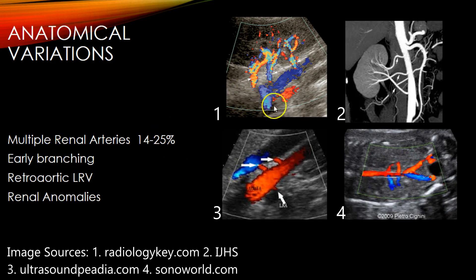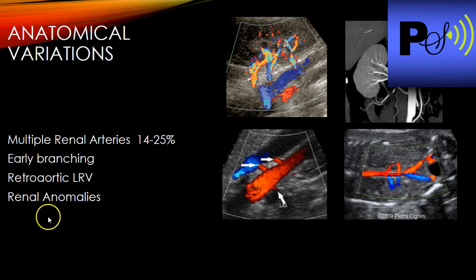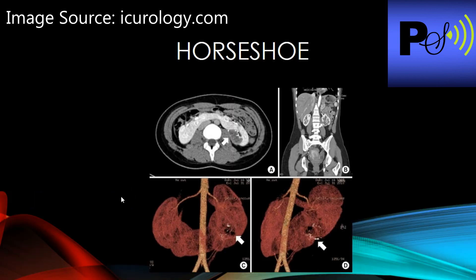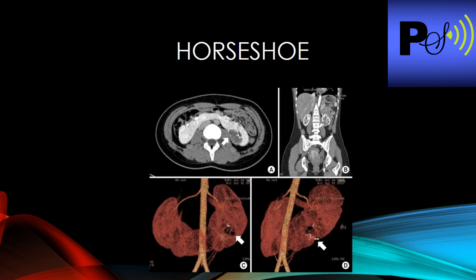Some people have early branching, where the artery leaves the aorta and starts to branch into segmental arteries before entering the kidney. Another variation is a retro-aortic left renal vein, where the left renal vein goes behind the aorta instead of coursing between the superior mesenteric artery and the aorta. Also consider renal anomalies — horseshoe kidneys, pancake kidneys, unilateral kidney, or pelvic kidney.